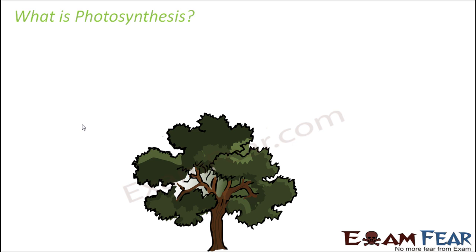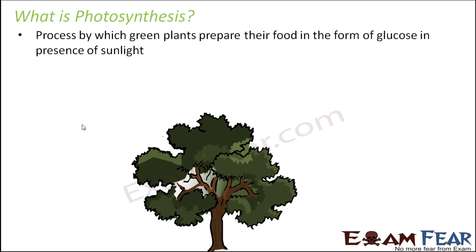Before we get into the detail, let us start from the scratch. For a quick recap: photosynthesis is the process by which green plants prepare their food in the form of glucose in the presence of sunlight. The food is prepared in the plants in the form of glucose, which is a simple sugar. In order to prepare this, plants need raw materials — carbon dioxide and water — and this has to happen in the presence of sunlight. Sunlight provides the light energy required for the process to take place.